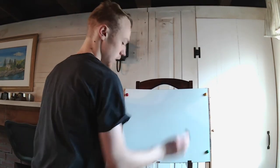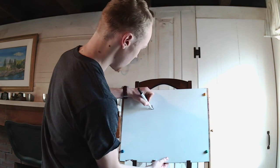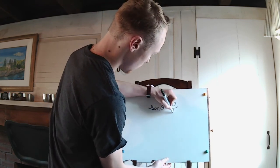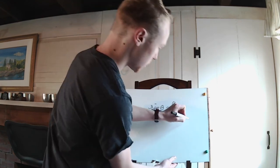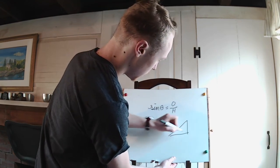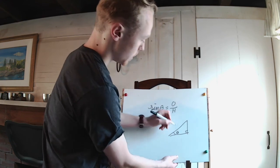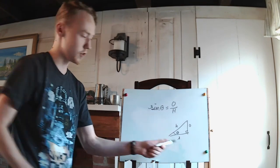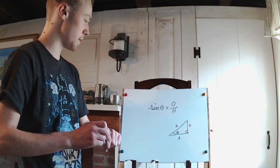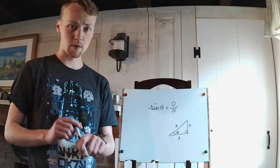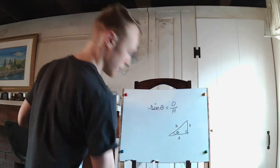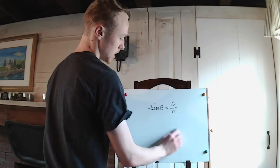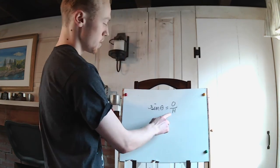Let's go ahead and erase the board and get a bit more intuition for what this means. We all know that the sine of theta, for example, is equal to the opposite over the hypotenuse, right? We're looking at a right triangle. Here we go, here's our theta, and then we know this is the hypotenuse, this is the opposite, and this is the adjacent side.